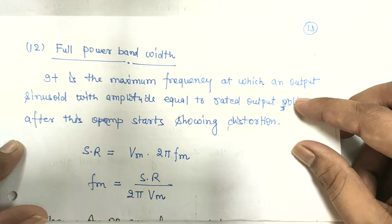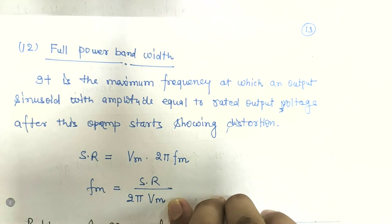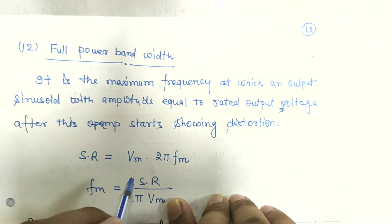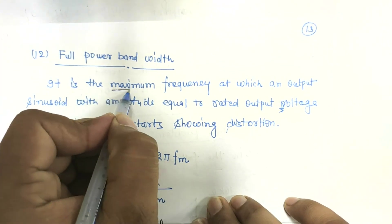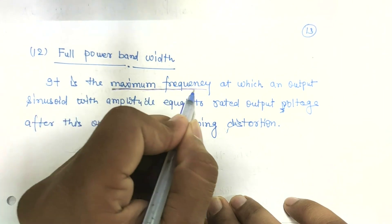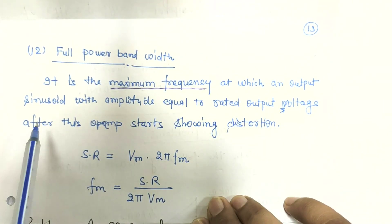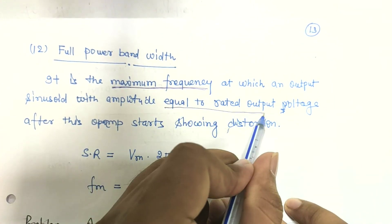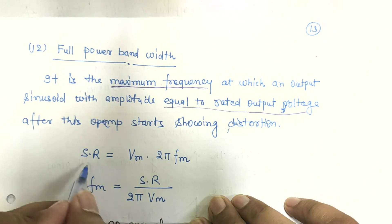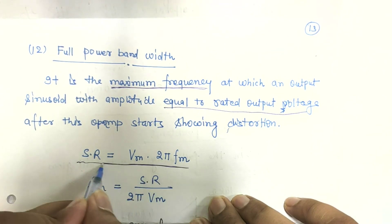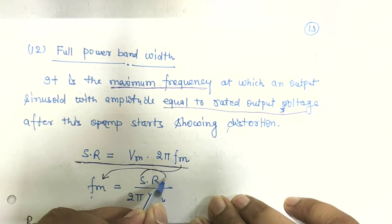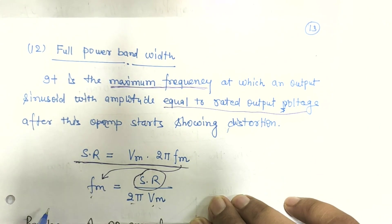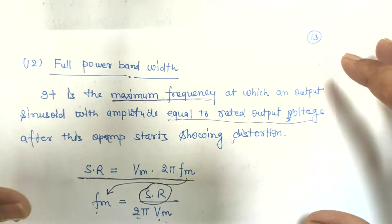The twelfth property is full power bandwidth, which is related to the slew rate. Full power bandwidth is the maximum frequency at which the output of an op-amp is sinusoidal with amplitude equal to the rated output voltage. We know that the slew rate equals Vm times 2π times fm, therefore the maximum frequency is slew rate divided by 2π·Vm. This is the full power bandwidth.